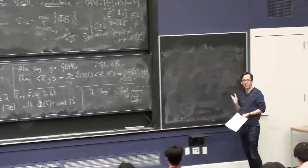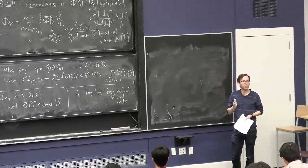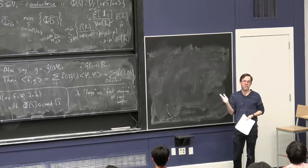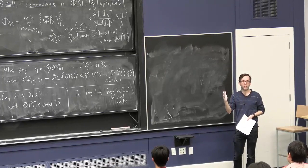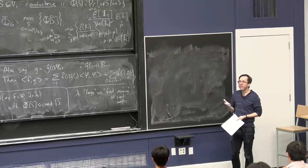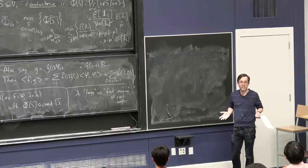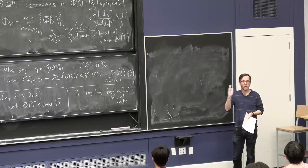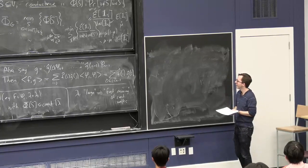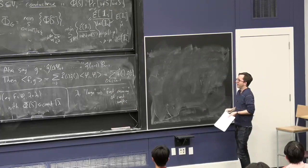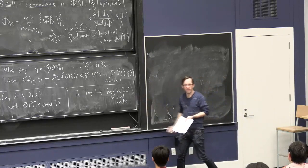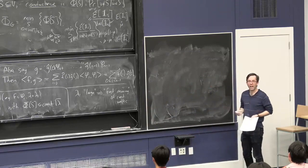A bipartite graph has this annoying even-odd property: if you start on the left side of the vertices and walk for an even number of steps, you'll always be on the left vertices, and for an odd number, always on the right. So it may well be that the invariant distribution is uniform on the vertices, but you'll never mix there because for any fixed t, you'll either always be on the left or always on the right. That's a very stupid annoyance, and it's basically the only thing blocking this from being true. We'll see a couple of hacks to get around it.